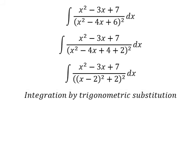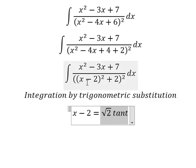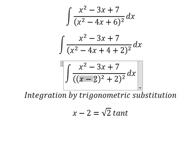I will put s minus 2 equal to the square root of 2 times tan(t). Because if we put this in here, we will have 2·tan²(t). We can do factorization: tan²(t) plus one, and we change that for sec²(t). And then we simplify by dx.